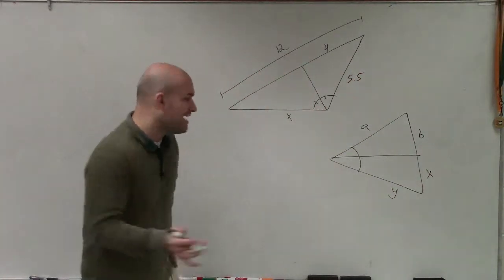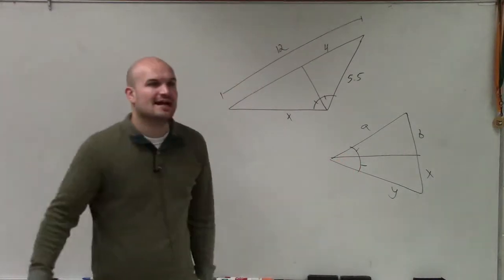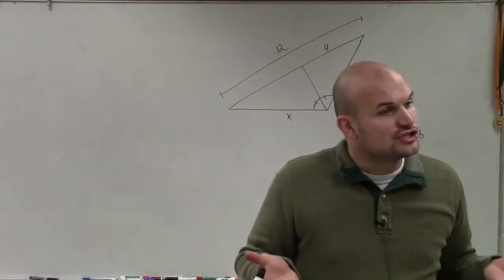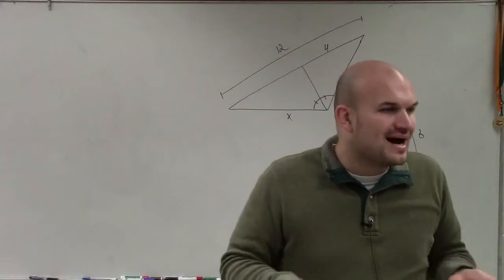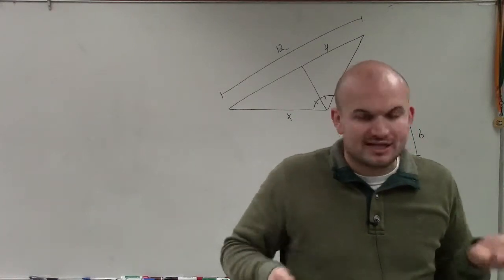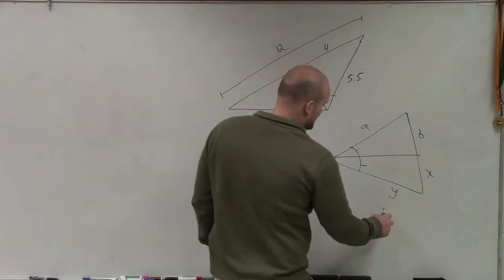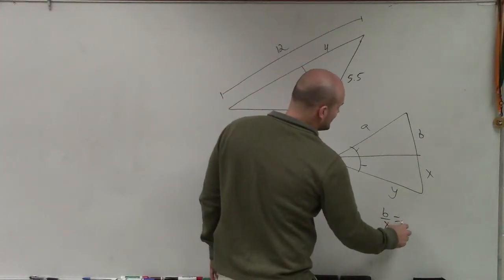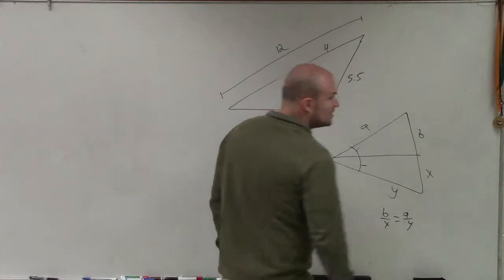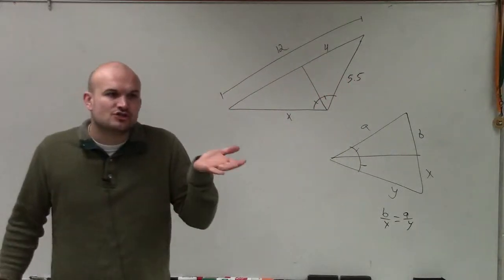When you have a bisector, that means it cuts an angle in half. Your angle bisector literally cuts your triangle into similar triangles, where now you can say that b is to x is equal to a is to y. So your bisector cuts your triangle in half.